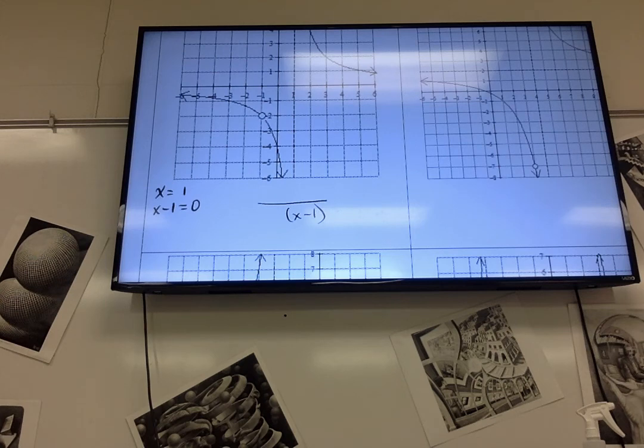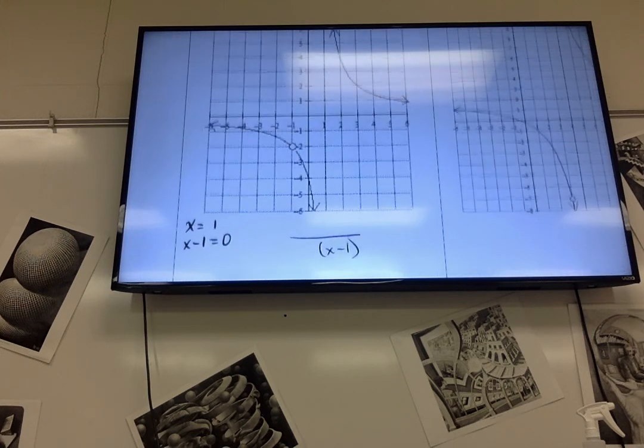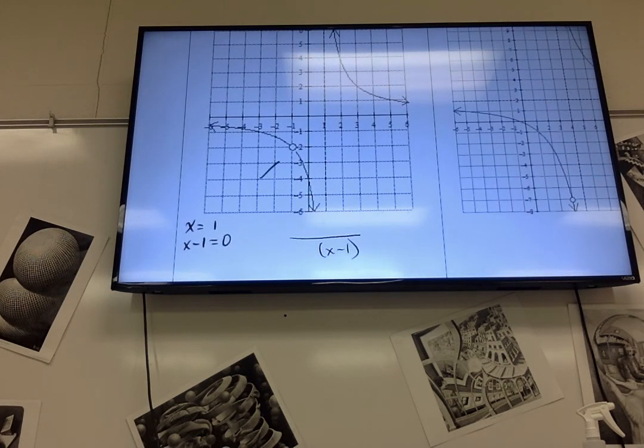What's something else we notice about this graph? There's a hole right there. There is a hole in the graph at, no I lied, it's not negative 2, it's negative 1, right here.